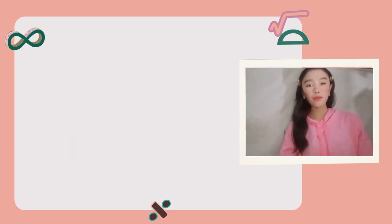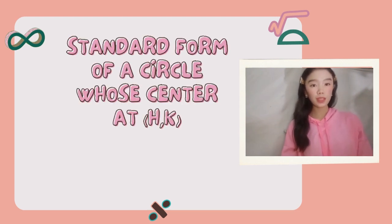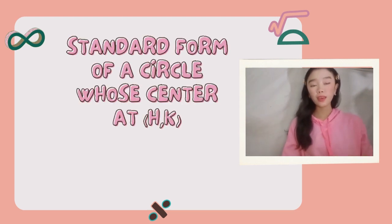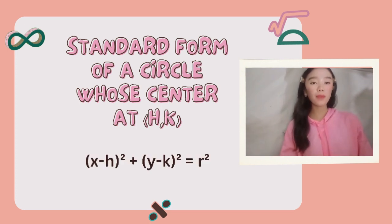But before we find its standard form, recall that the standard form of the equation of a circle with center at (h, k) is: x minus h squared plus y minus k squared equals r squared.